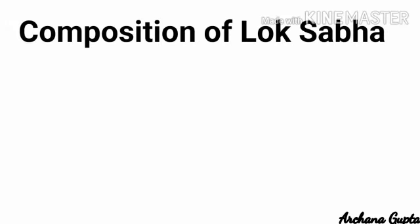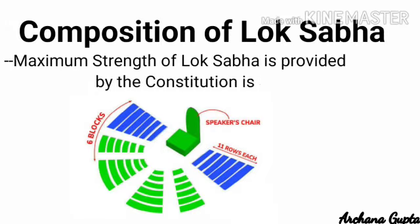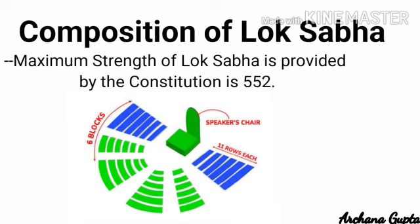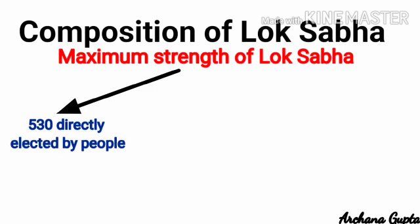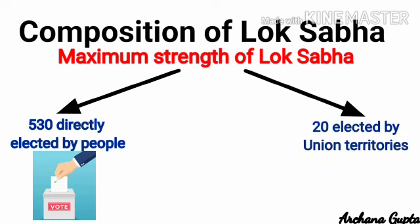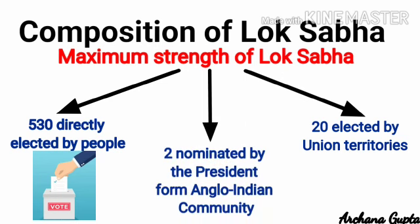The maximum strength of the Lok Sabha as provided by the Constitution is 552. Out of this, 530 members are elected through direct voting from the states, and 20 members are elected from the Union territories in the same way. Two members shall be nominated by the President from the Anglo-Indian community if the President feels that the community has inadequate representation in the House.